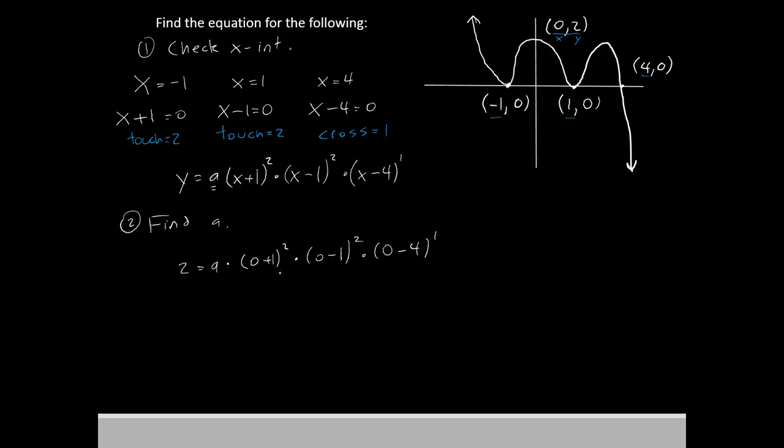Let's just do the algebra. 1 squared is 1. Negative 1 squared is still 1 times negative 4 to the first is negative 4 still times a and still equals 2.